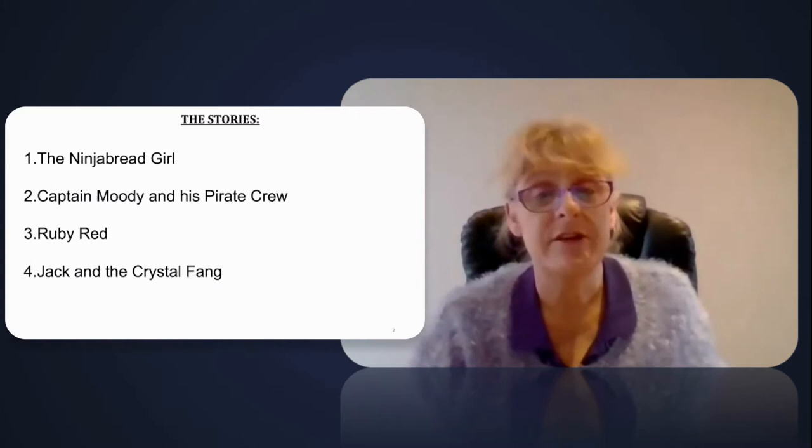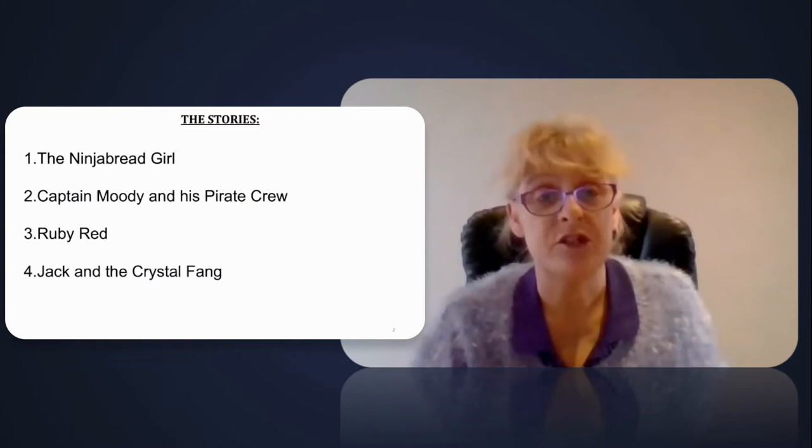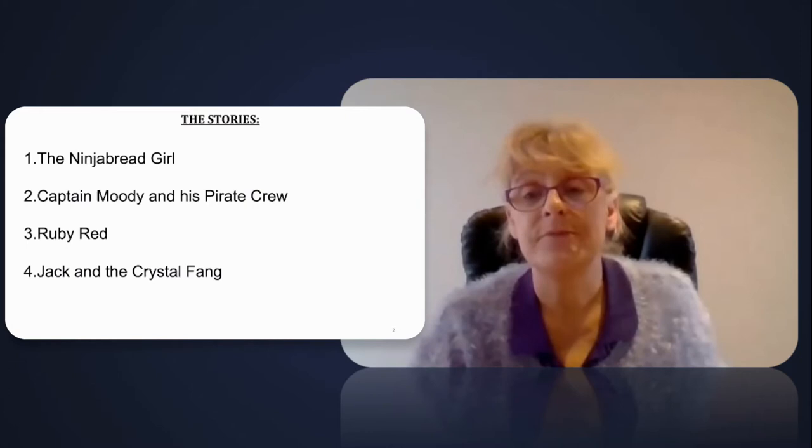There are four stories: The Ninja Bread Girl, Captain Moody and his Pirate Crew, Ruby Red which is a version of Little Red Riding Hood with an unexpected twist, and finally Jack and the Crystal Fang which takes the form of a legend.